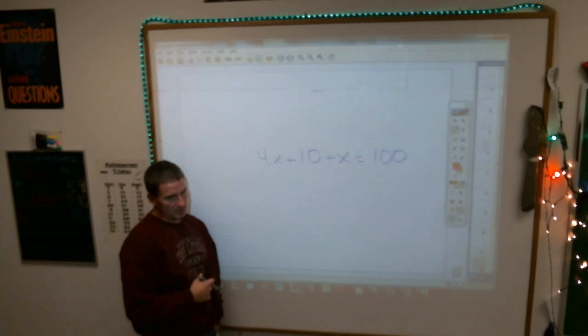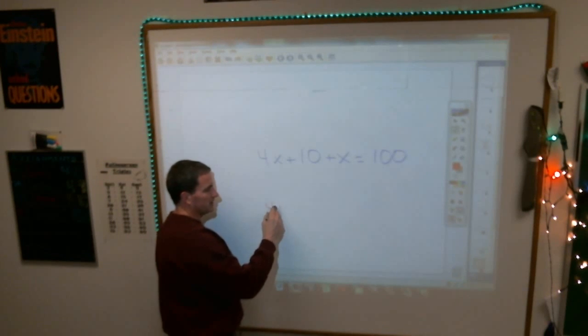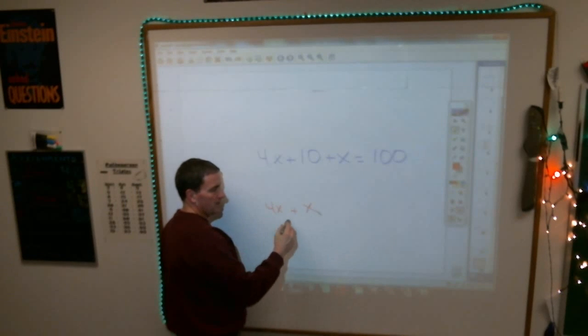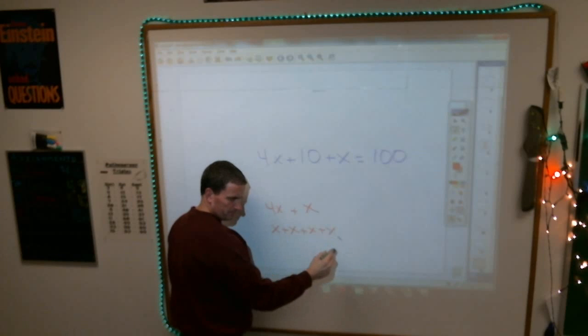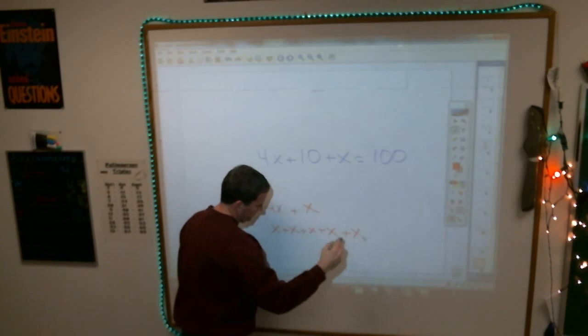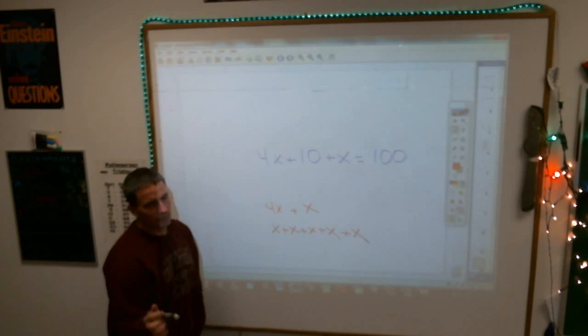4x plus x. Here, let me do it out for you if you're confused on this. Here, 4x plus x means this. 4x's means you have this. 4x plus x plus another x. Wait, wait for it.